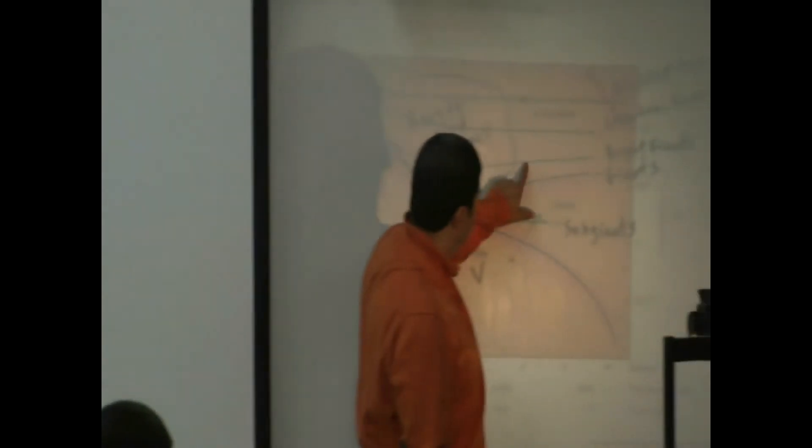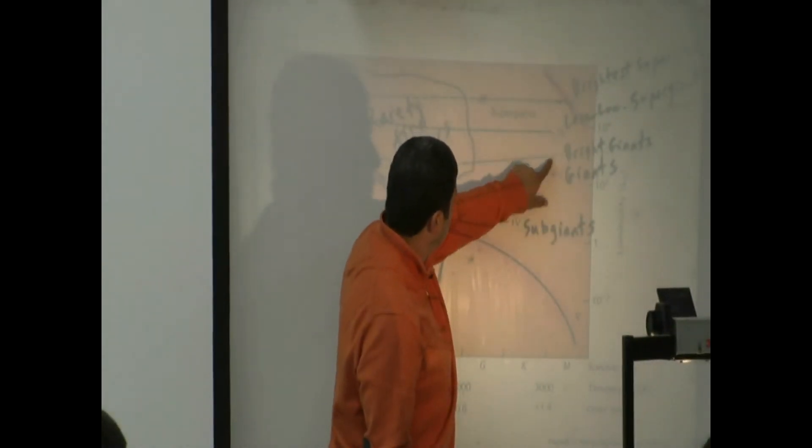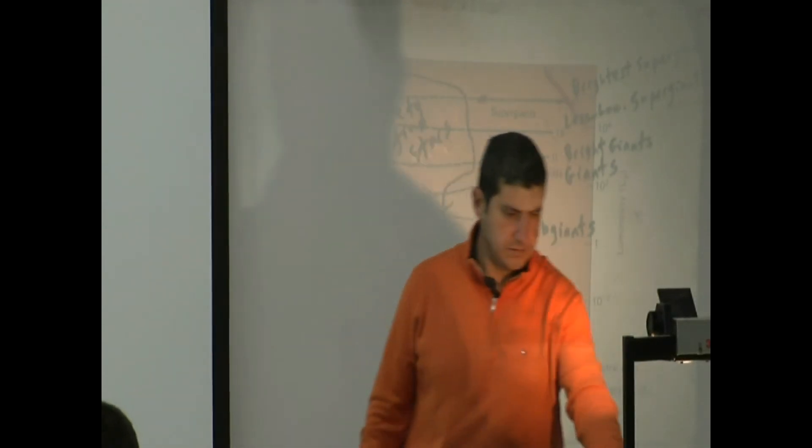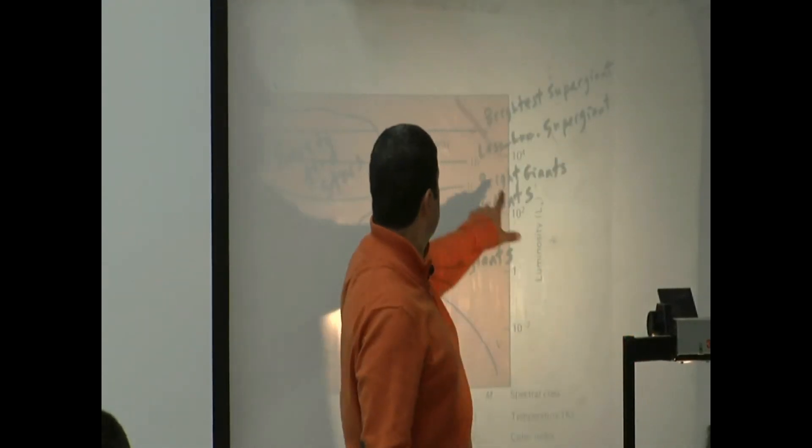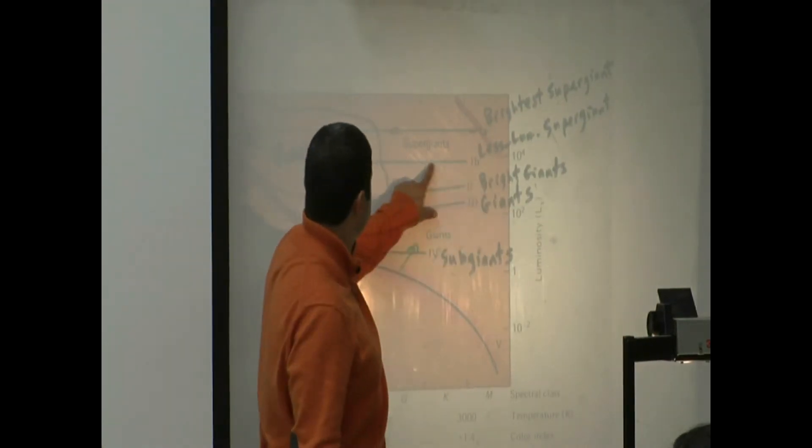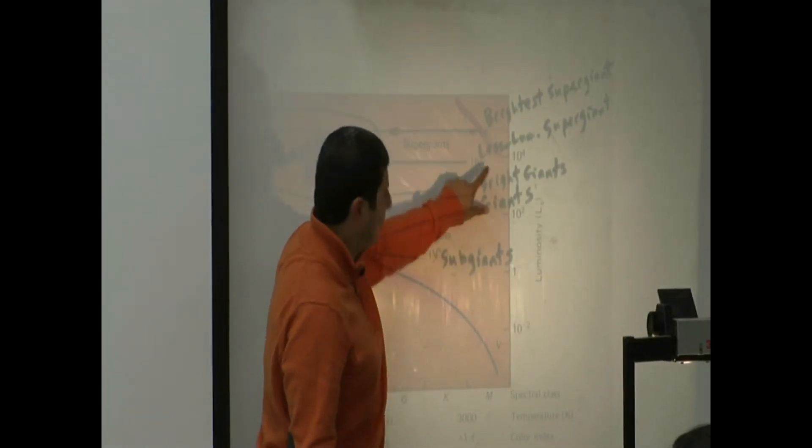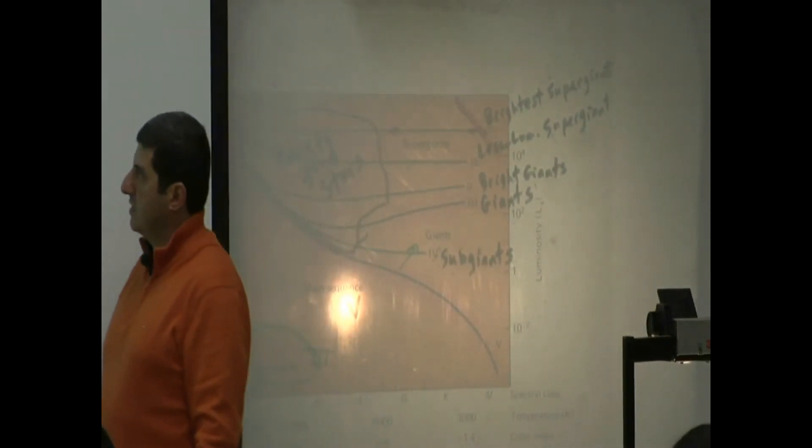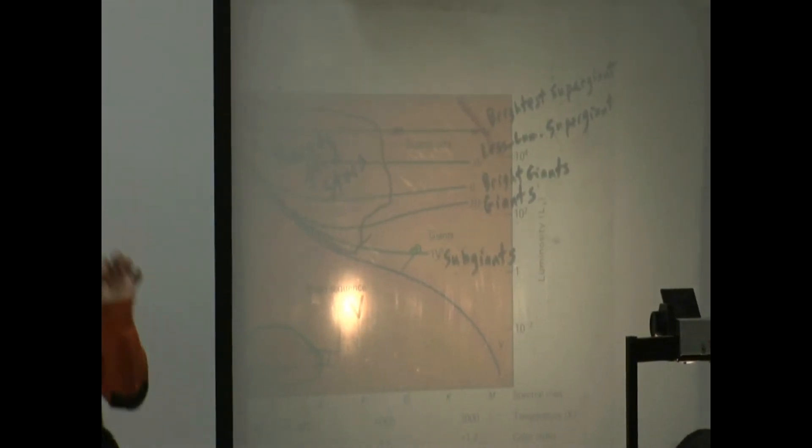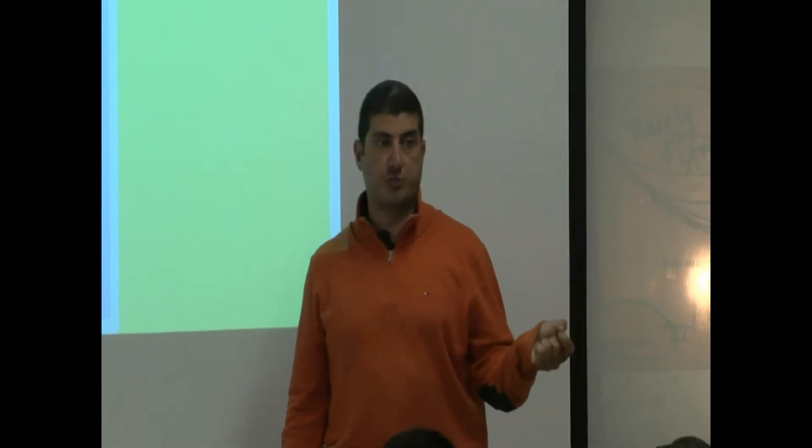When you go above that, they are less luminous supergiants, right here—Ib. That means from the supergiant category, they're less luminous than the luminous supergiants.